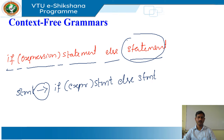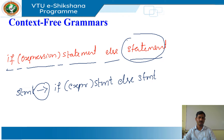In a production, lexical elements like the keyword 'if' and the parentheses are called terminals. Variables like 'expression' and 'statement' represent sequences of terminals and are called non-terminals.